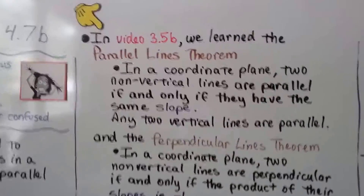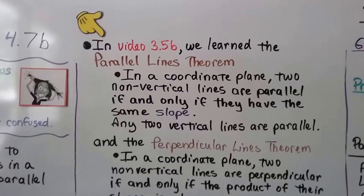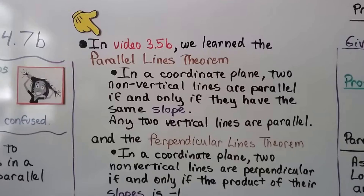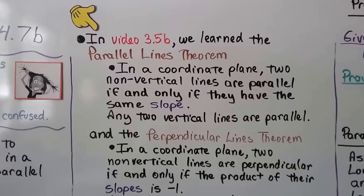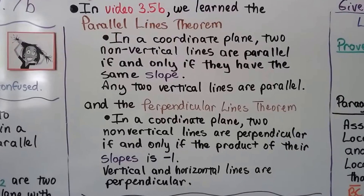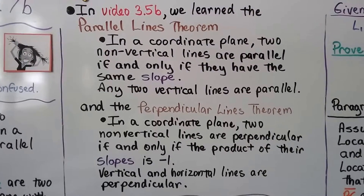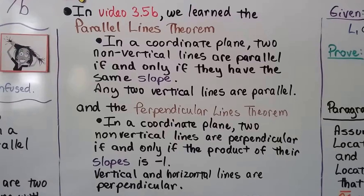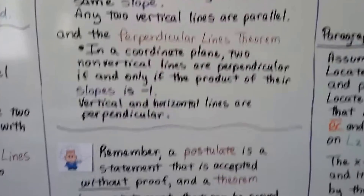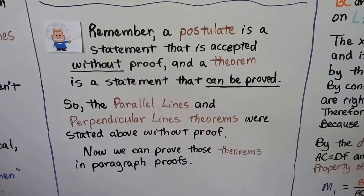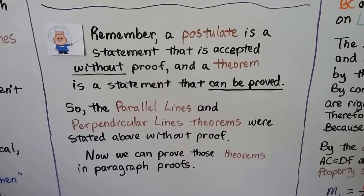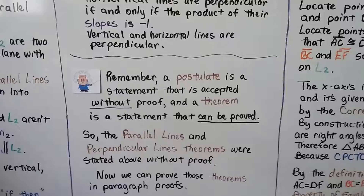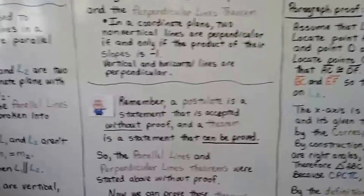Here's a quick recap. In video 3.5b back in chapter 3, we learned the parallel lines theorem: in a coordinate plane, two non-vertical lines are parallel if and only if they have the same slope, and any two vertical lines are parallel. The perpendicular lines theorem said: in a coordinate plane, two non-vertical lines are perpendicular if and only if the product of their slopes is negative 1, and vertical and horizontal lines are perpendicular. Remember, a postulate is accepted without proof and a theorem can be proved. These theorems were stated previously without proof, and now we can prove them in paragraph proofs.